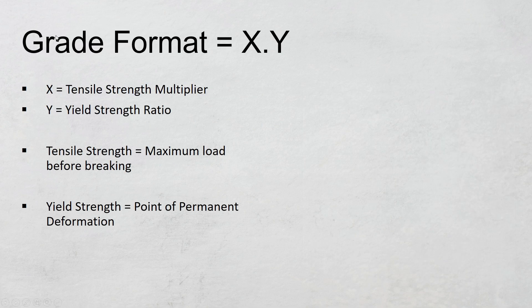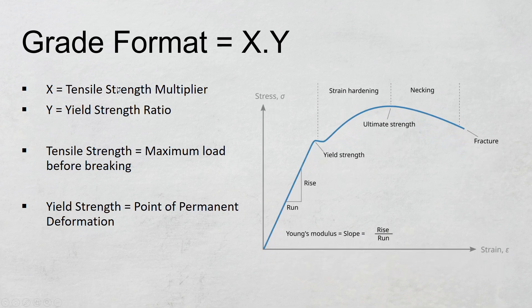The formula for calculating bolt grade is X.Y, where X is the tensile strength multiplier and Y is the yield strength ratio. Tensile strength is the maximum load before breaking, and yield strength is the point of permanent deformation. This is the ultimate tensile strength and this is the yield strength on a simple stress-strain diagram.